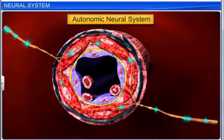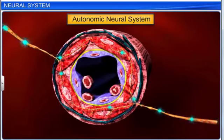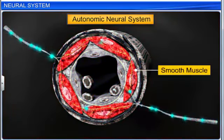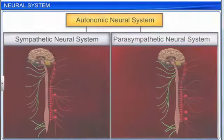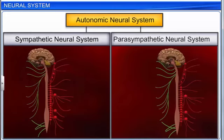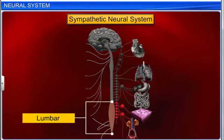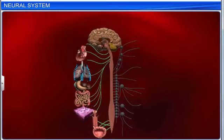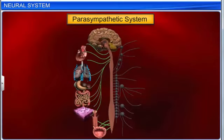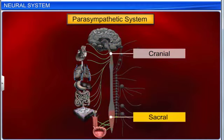The nerve fibers of the autonomic nervous system extend up to the visceral organs and smooth muscles of the body. The autonomic neural system is further classified into the sympathetic neural system and the parasympathetic neural system. The sympathetic system comprises the neurons of the thoracic and lumbar regions. The parasympathetic system comprises the cranial and sacral neurons.